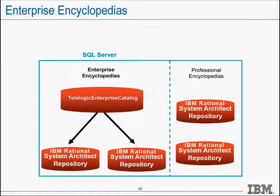The catalog is created in that specific instance to control access to all encyclopedias within that instance. That is what is meant by one-to-one. If you have a shared data server, you should have a separate instance for System Architect — otherwise the catalog gets created on your server and will affect all databases on that server. The System Architect catalog manager is the utility used to control and configure this enterprise catalog.